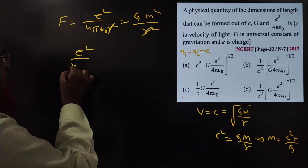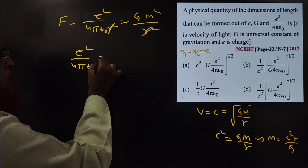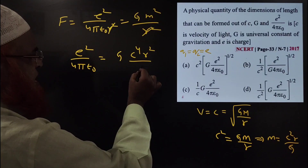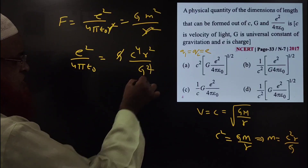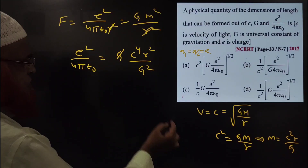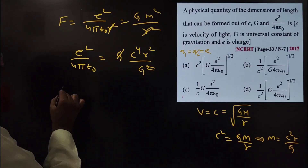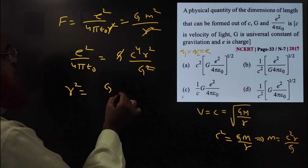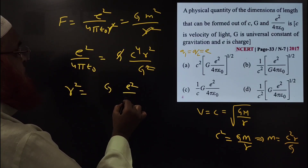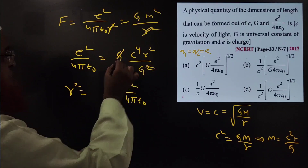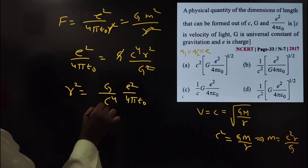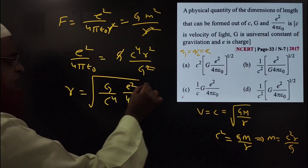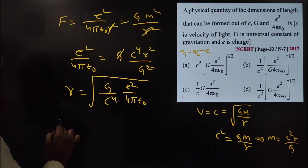Since M² is available in our expression, we square that value: M² equals C⁴·R² by G². Now, E² by 4π epsilon naught equals G·M², which gives C⁴·R² divided by G². The G terms cancel — G divided by G² — so by cross multiplication, R² equals G·(E² by 4π epsilon naught) divided by C⁴.